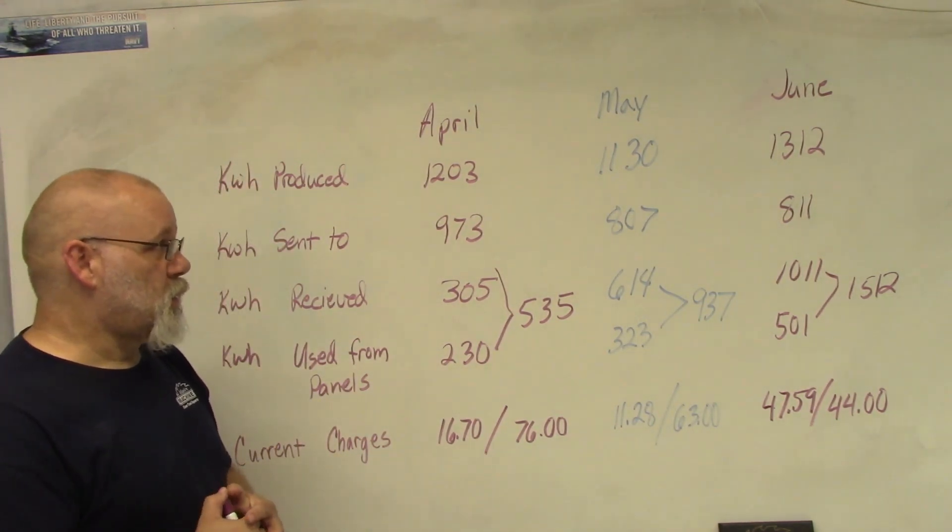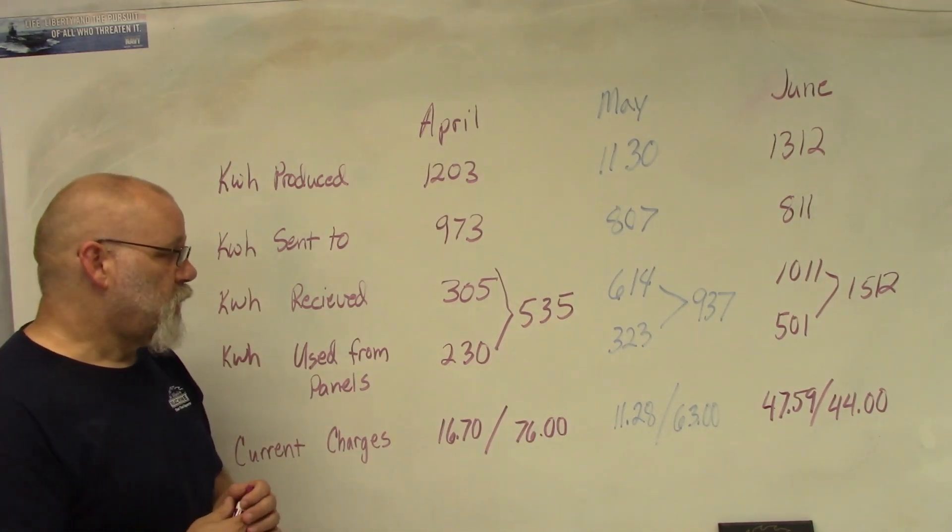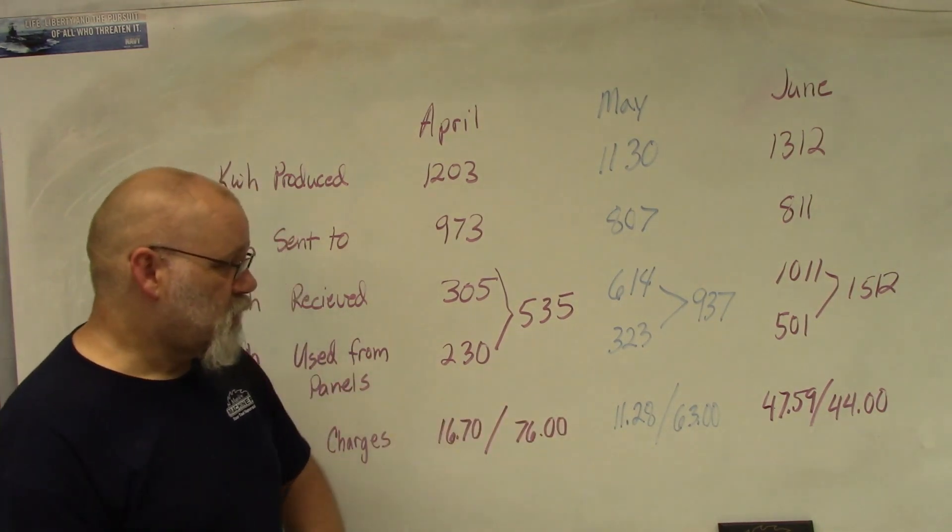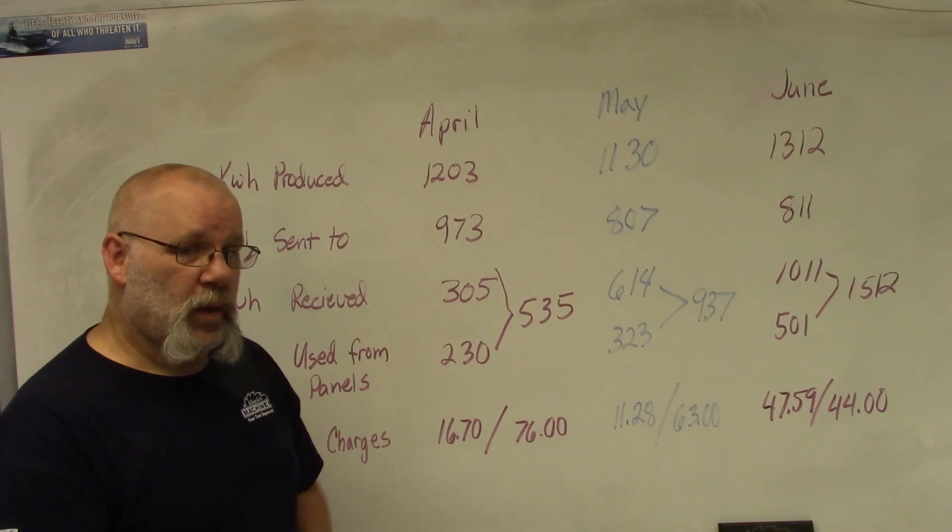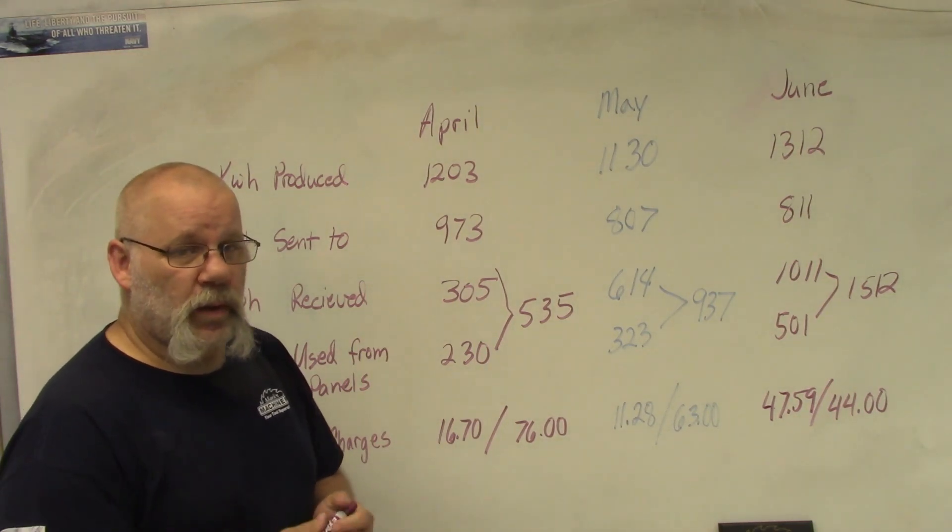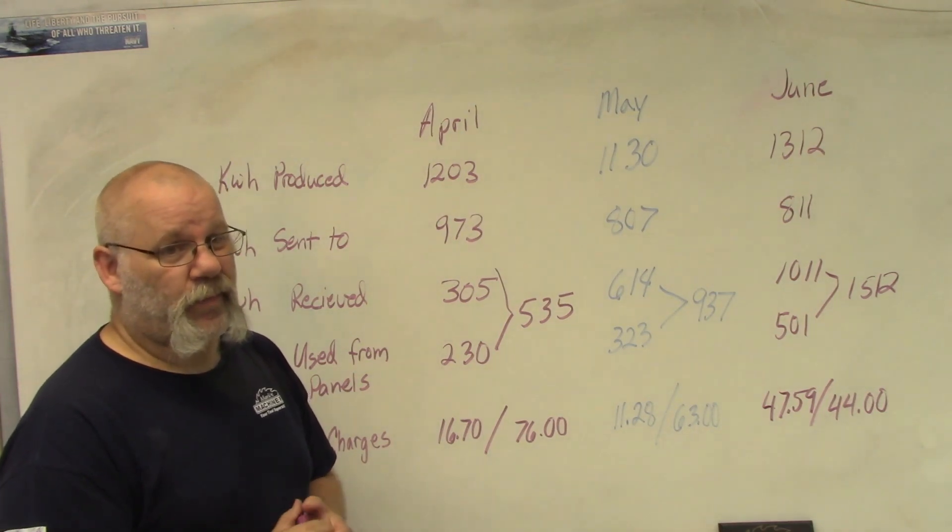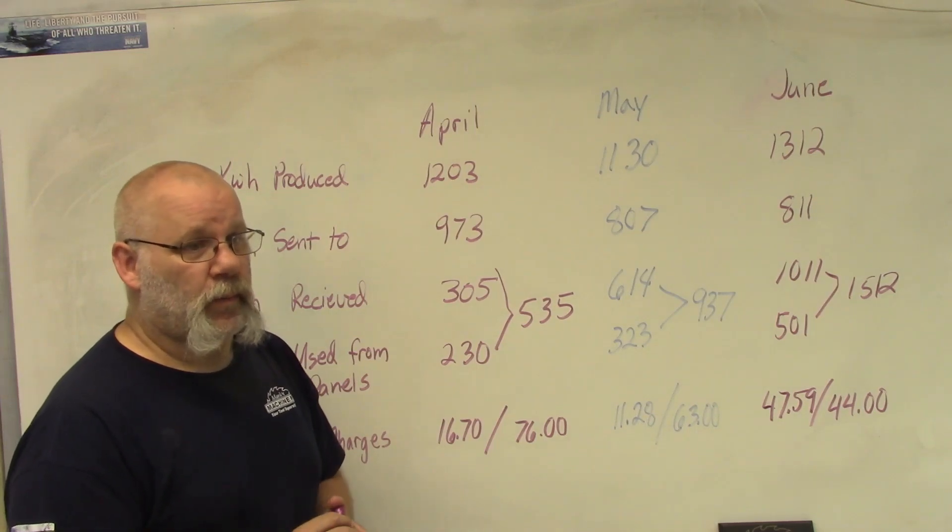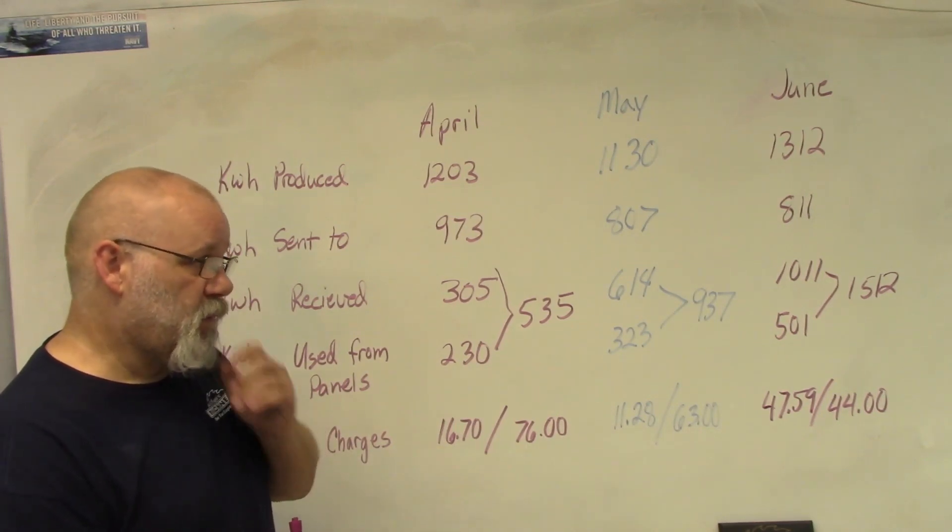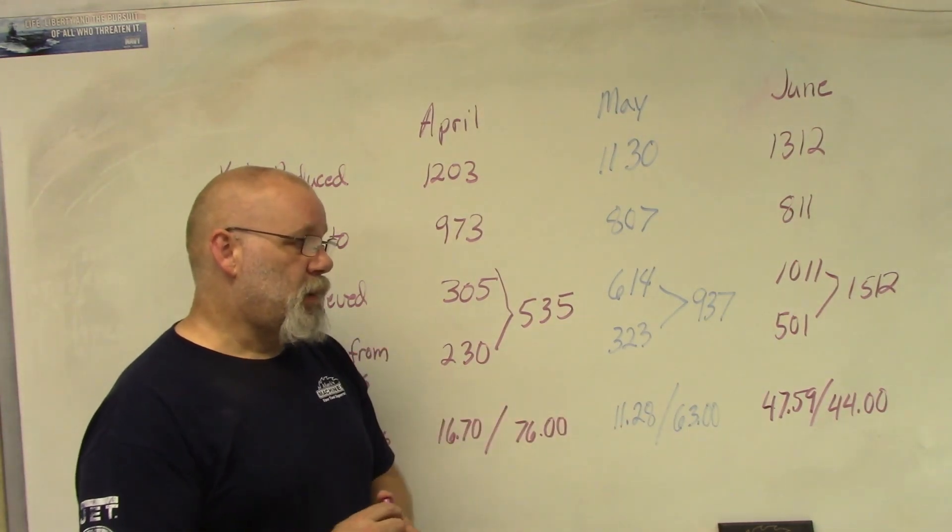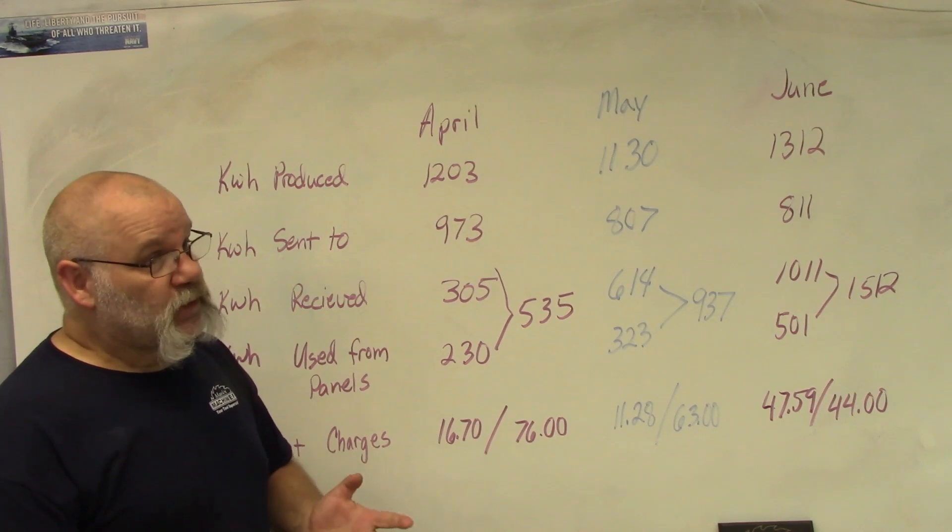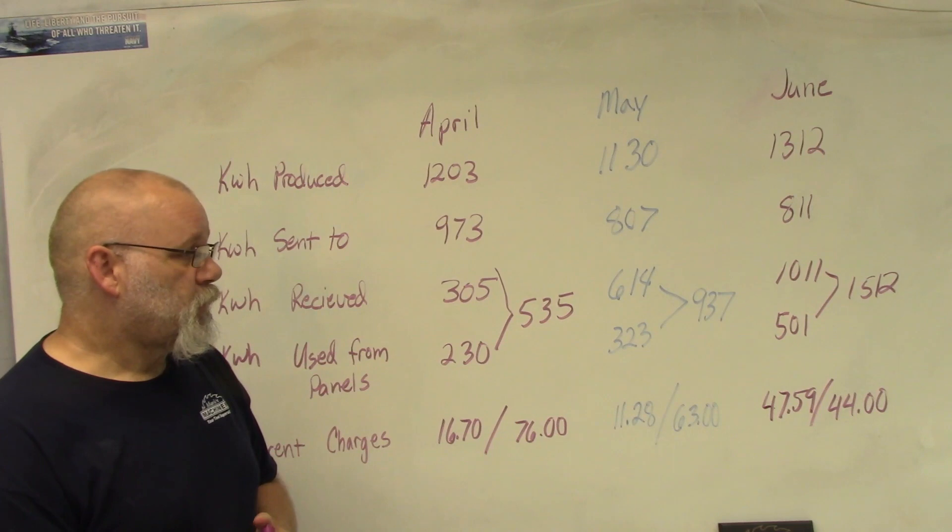So there you go, that is the solar panel update for April, May and June 2023. If we didn't pay the monthly thing, it would be $16.70, $11.28, and $47.59. When we started last year, the average monthly payment was $149. I heard recently they're going to increase it by 10%, so the electric bill will be going up $15 if I was still drawing all my electricity from the power company. My bill will probably only go up a couple of dollars. Is it worth it? So far I think it is worth it.